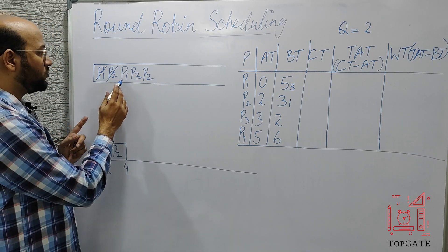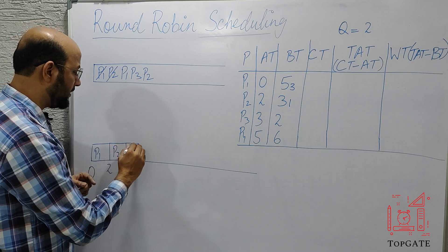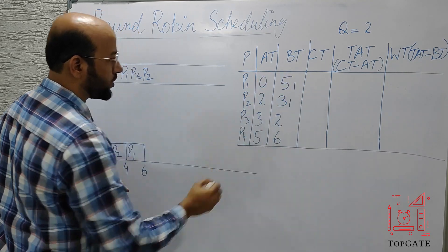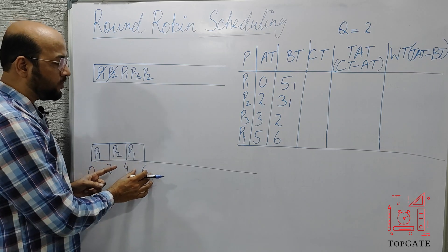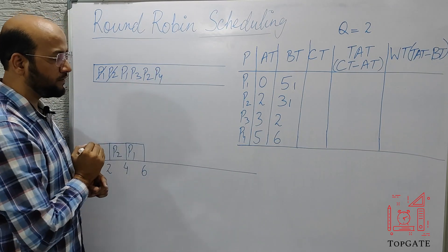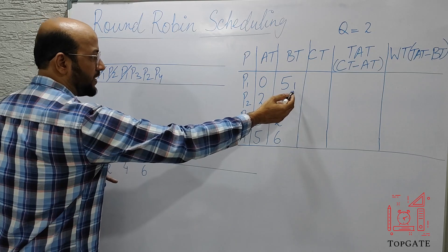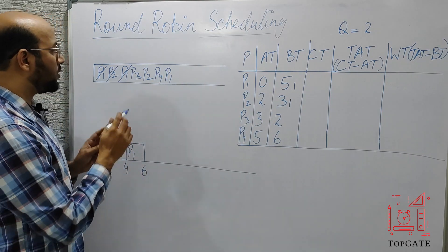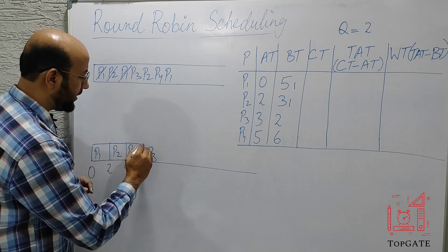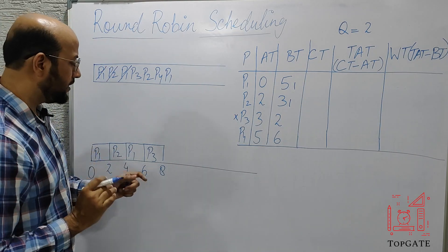Now P1 is at the head of the ready queue with 3 units remaining. Time quantum is 2, so P1 executes from time 4 to time 6, leaving 1 unit. At time 6, P4 arrives and is added to the ready queue. P1 still has 1 unit left, so it's cut and moved to the tail. Next, P3 executes from time 6 — its requirement is exactly 2 units, so it completes at time 8 and exits the system.